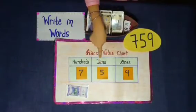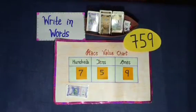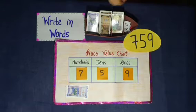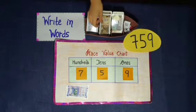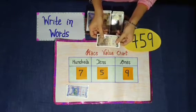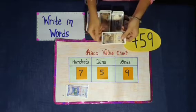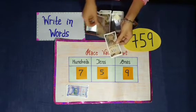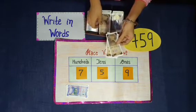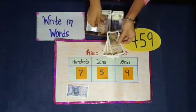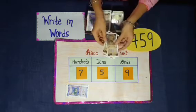Digit 5 at 10's place, so we will use rupees 10 notes for the 10's place and count: 10, 20, 30, 40, 50.